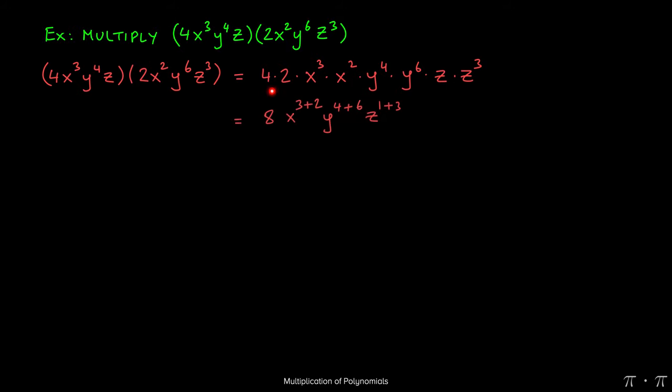So 4 times 2 will give us 8. x³ times x² will give us x to the 3 plus 2. This is coming from the product rule of exponents. Similarly, y⁴ times y⁶ will give us y to the 4 plus 6. And lastly, z times z³ will give us z to the 1 plus 3.